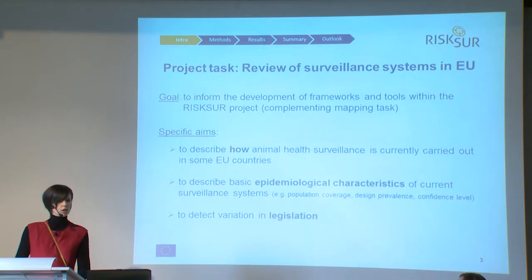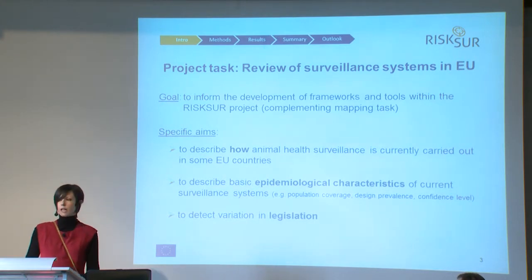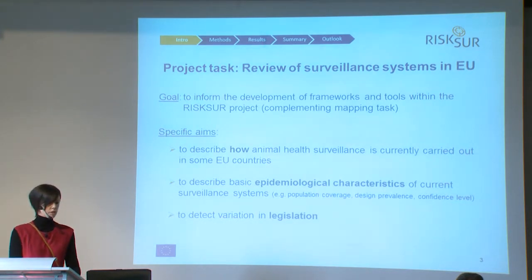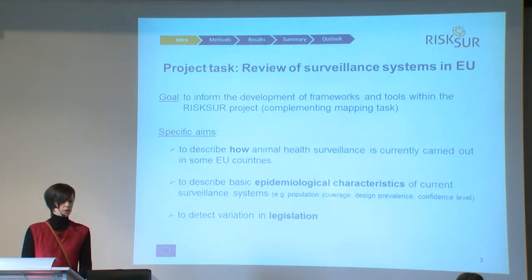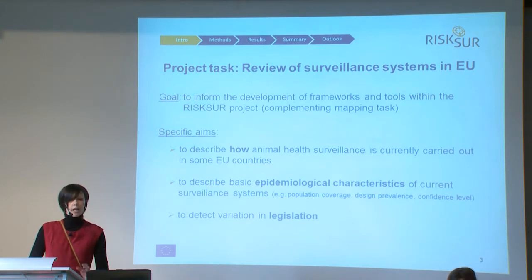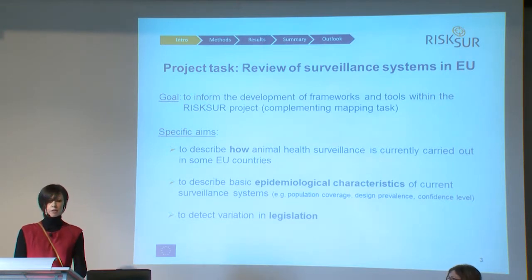The goal of this task was to describe how animal health surveillance is currently carried out in some European countries, paying attention to basic epidemiological characteristics such as population coverage or design prevalence, and to possibly detect any variation in legislation. This complements the mapping exercise with a narrower focus but a higher level of detail.